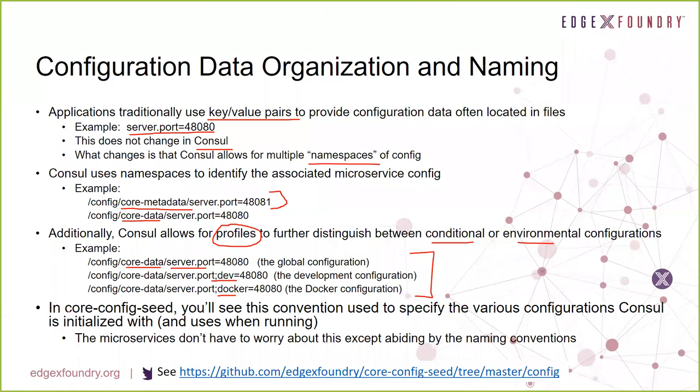If you look in the core config seed application that Dell wrote, this is the mechanism used to specify all the configuration information in the initialization process for Consul. If you go out to the core config seed files on GitHub, you'll see all sorts of key-value pair property files using these namespaces and profiles. We don't use a lot of profiles — just a default profile and a Docker profile for when operating inside a Docker runtime environment. But certainly you could set up alternate development or testing environments and use that capability.